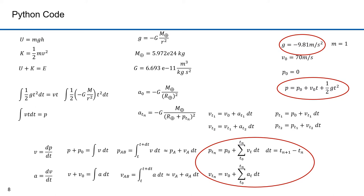You might ask what happened to the one half factor in the third term of the position equation. If you choose delta time dt small enough, a good approximation of the new velocity is the old velocity plus acceleration times the small delta time. Likewise, a good approximation of position is the old position plus velocity times the small delta time. These are approximations — they aren't perfect. And as I said, we can't use integral calculus to derive closed-form equations for these kinds of equations.